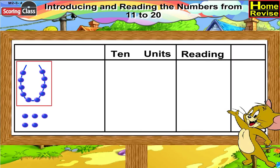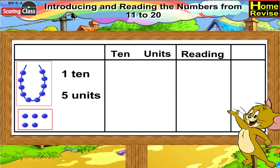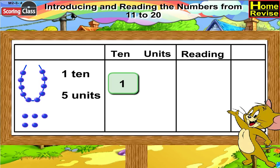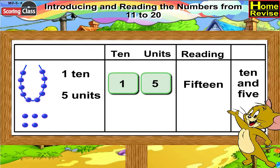We have a string of ten beads and five extra beads, which means it is one ten, five units. Under tens put one, under units you write five. We will read it as fifteen, or ten and five.